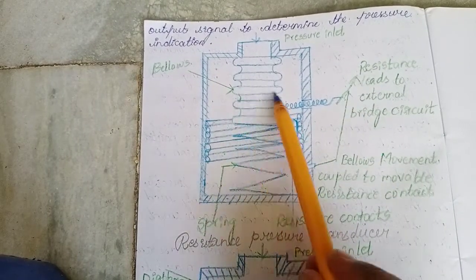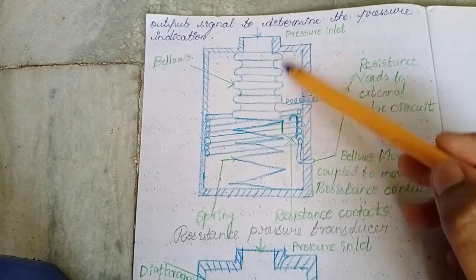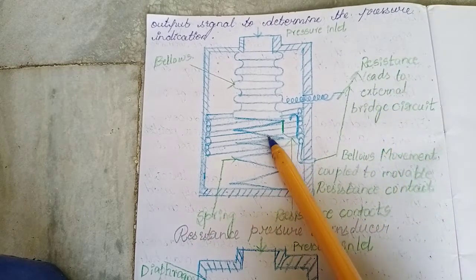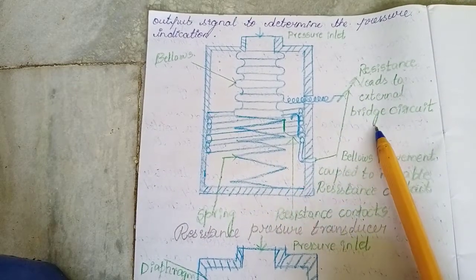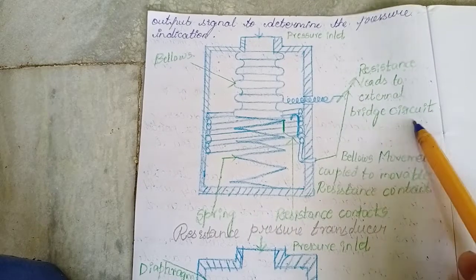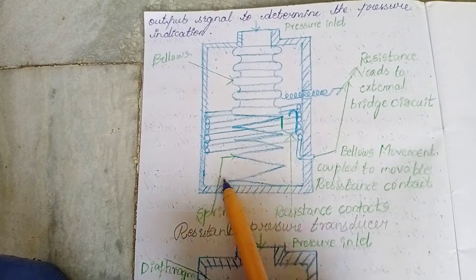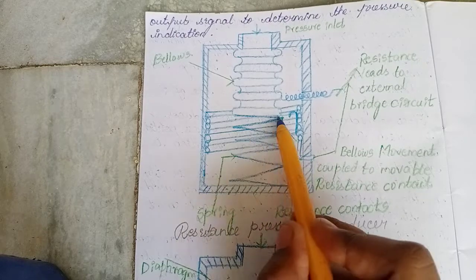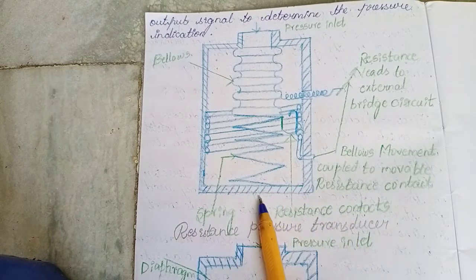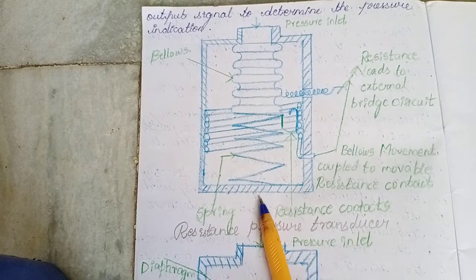These are bellows — this is the bellow-type transducer. The resistance leads connect to an external bridge circuit. We connect the resistance to the external bridge circuit via these leads. This is a variable resistor. This is a spring: when pressure is applied on this side, the spring will contract and then expand. Here we have a resistance contact.